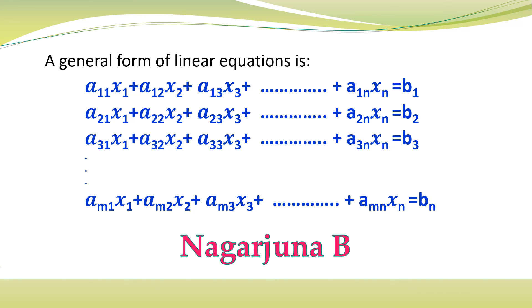up to a1nxn is equal to bn. So this is a general form of a linear equation consisting of n unknowns and m equations.